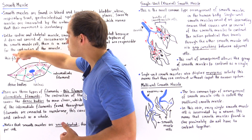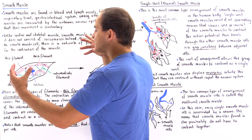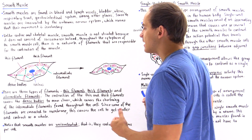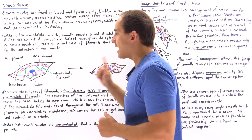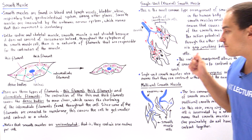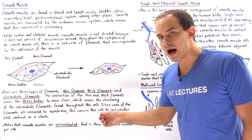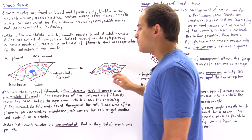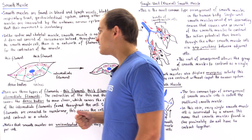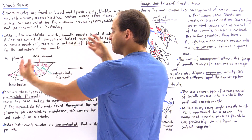Some of these filaments are also attached to the membrane of the cell. When contraction takes place, this network of filaments contracts uniformly, causing the entire cell to shrink inward and become smaller. So the contraction of the thin and thick filaments causes dense bodies to move closer, which causes shortening of the intermediate filaments throughout the entire cell, ultimately resulting in contraction and shrinkage of the entire cell.